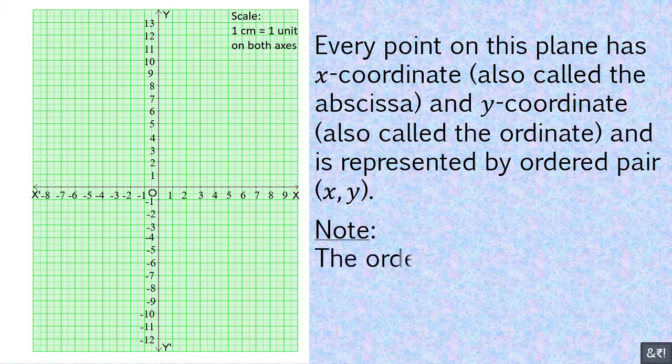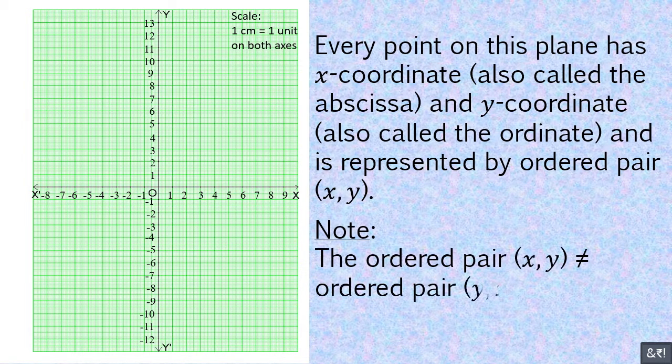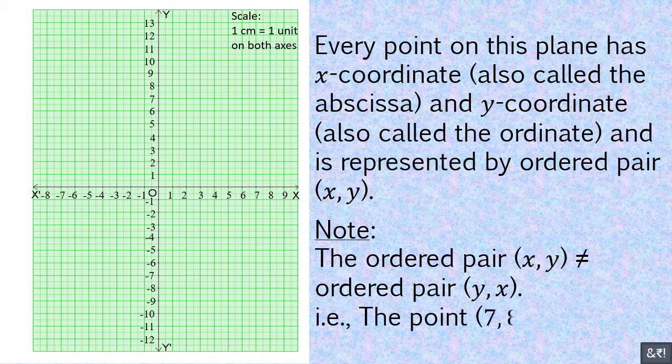Note: the ordered pair (x, y) does not equal the ordered pair (y, x). That is, the point (7, 8) does not equal (8, 7).